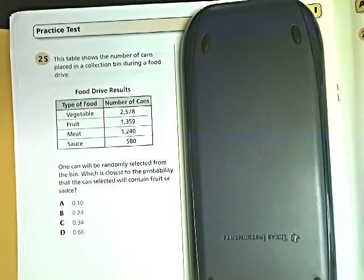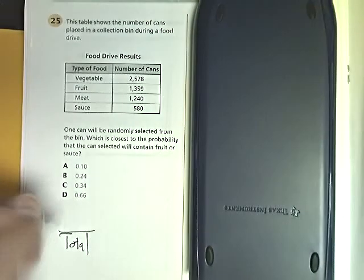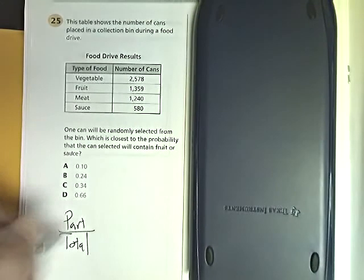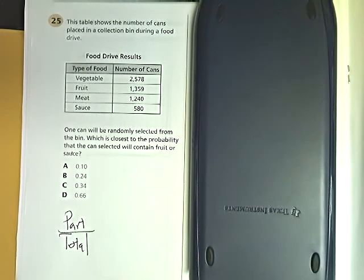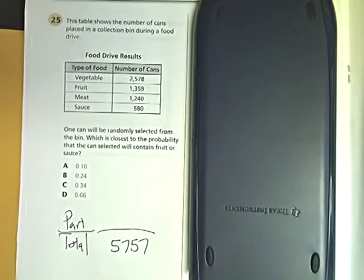So like I said before, you want to put total on the bottom, not the cereal, and then the part on top. So the total in this case would just be adding them all up. So 2,578 plus 1,359 plus 1,240 plus 580. So on the bottom is 5,757.